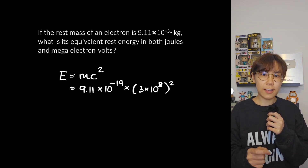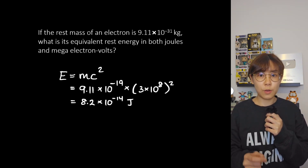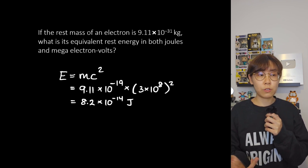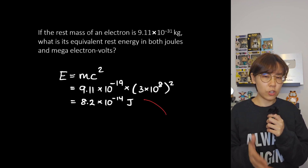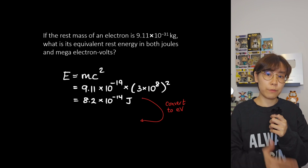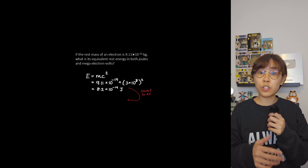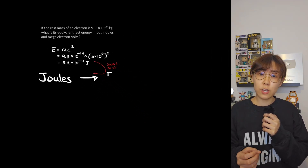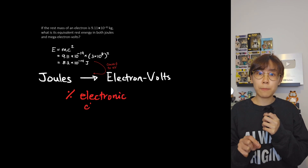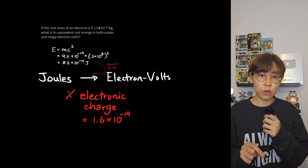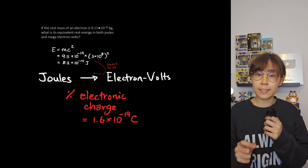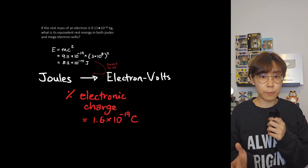So its rest energy is 8.2 times 10 to the minus 14 joules. In general, to convert joules into electron volts, which is an alternative unit of energy, we divide the energy in joules by the electronic charge, which is 1.6 times 10 to the minus 19 coulombs.